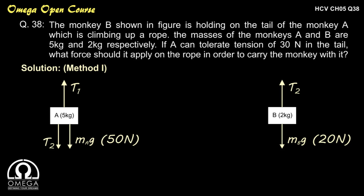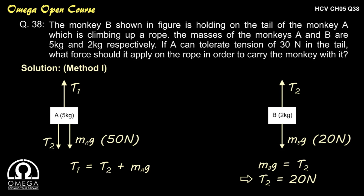In order to keep the tension to minimum, the monkey will move up without any acceleration, so the net force acting on both monkeys must be equal to zero. Therefore, M_B × g = T2, which implies T2 = 20 N. For monkey A, balancing forces in the vertical direction, we get T1 = T2 + M_A × g = 20 + 50 = 70 N. So 70 N is the minimum force that monkey A has to apply on the rope to move up.